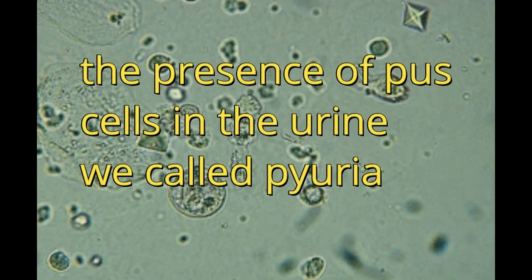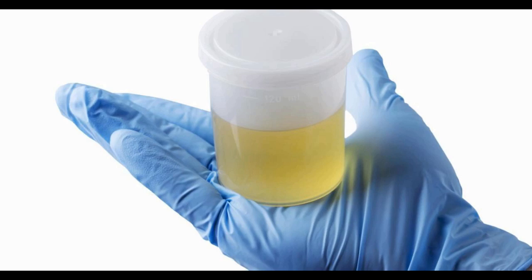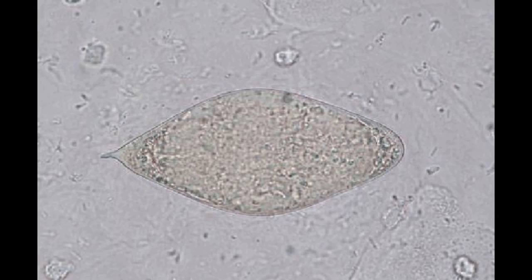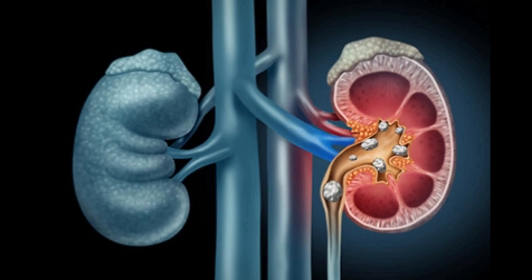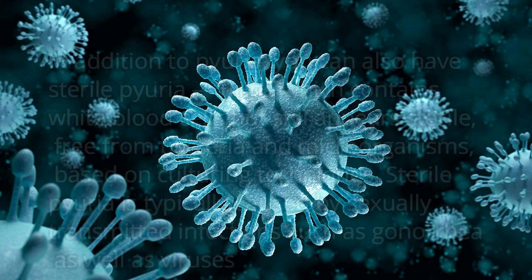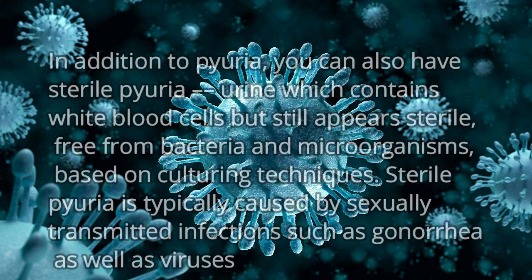The presence of pus cells in the urine is called pyuria. Pyuria causes cloudy urine and frequently indicates the presence of urinary tract infection, parasites, kidney stones, tumors and cysts, and interstitial cystitis can also lead to pyuria.